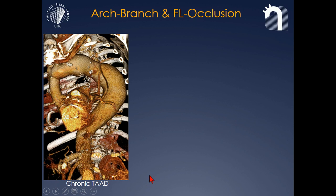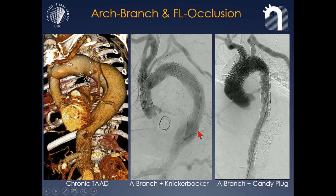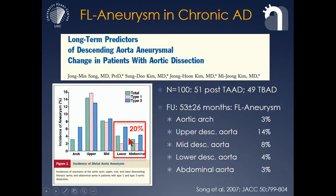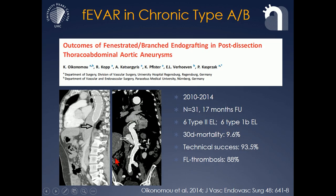What we have learned is that today, in patients that we treat for chronic type A dissection after ascending repair, we include this kind of false lumen seal. As you can imagine, if you would just do the arch repair here, you're not going to seal off the large mid-descending aneurysm. As you see here, an example of an arch branch and Knickerbocker — we already include this in the initial repair. Or in this picture, you see the combination of an arch branch and a candy plug to really exclude the large proximal descending aneurysm. Results have been published in limited numbers of patients with quite good success but also with some significant mortality and morbidity.